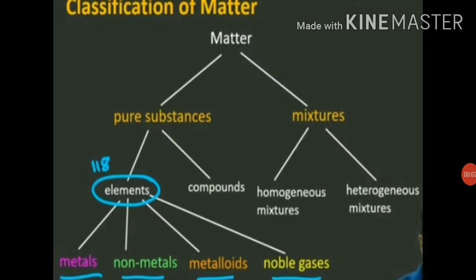In the last video, we had learned about classification of matter. Let's revise once again, because this classification of matter is very important for you. Matter is anything which occupies space and has mass. Mass is the measure of the amount of matter in an object. Chemically, matter is divided into pure substances and mixtures.